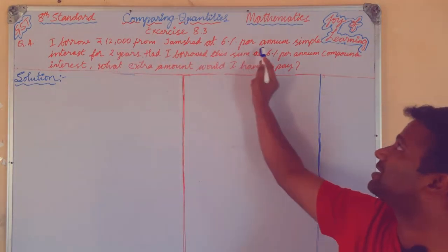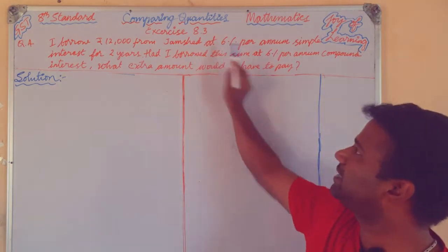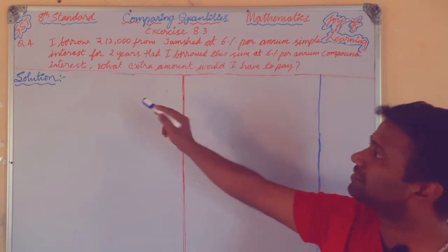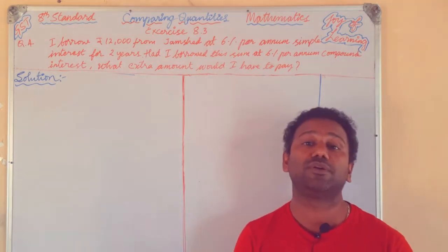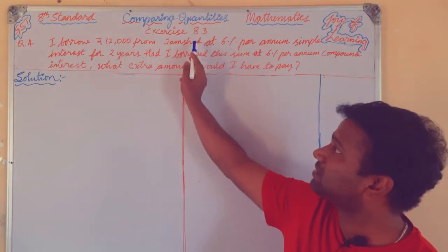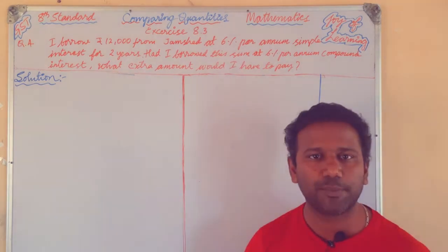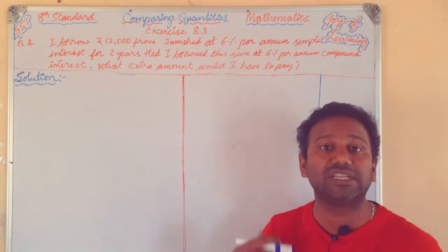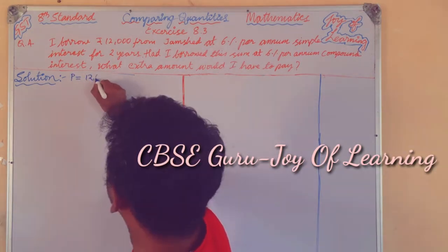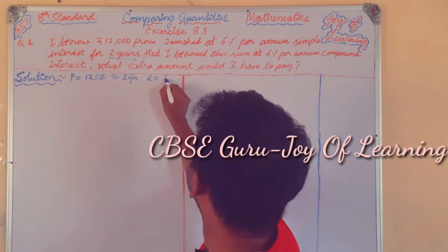I borrowed 12,000 rupees from Jamshed at 6% per annum simple interest for 2 years. I also borrowed 12,000 rupees at 6% per annum compound interest for 2 years. Time: 2 years, Rate of interest: 6%.